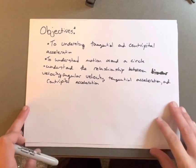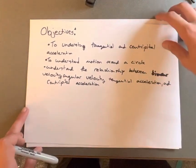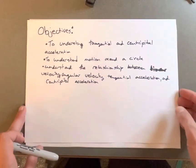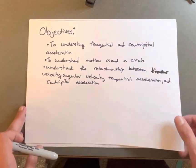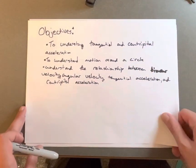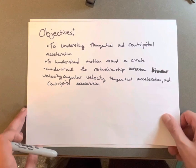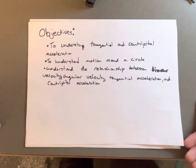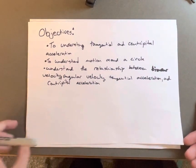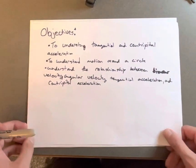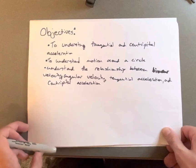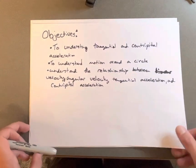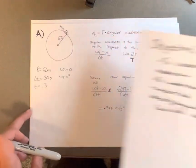Our objective is to understand tangential and centripetal acceleration, to understand motion around a circle, and to understand the relationship between linear velocity, angular velocity, tangential acceleration, and centripetal acceleration.